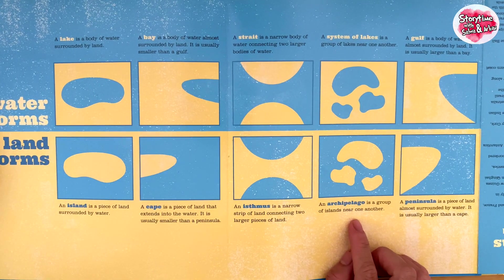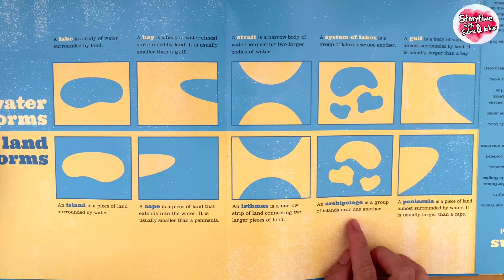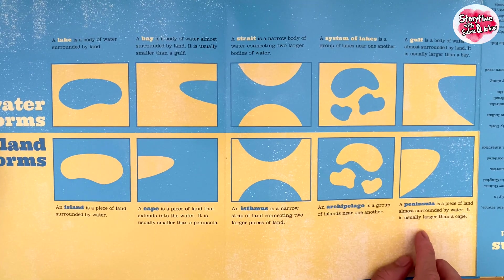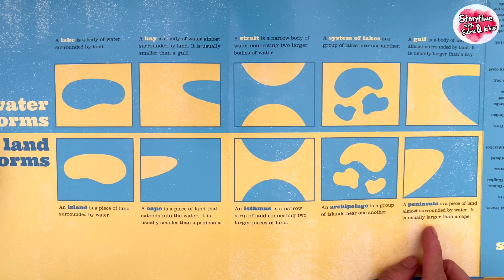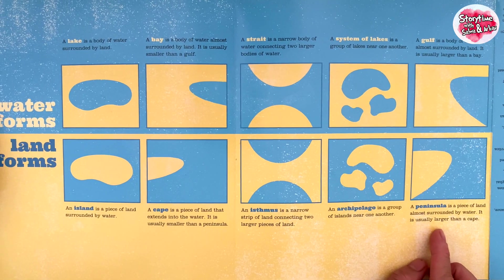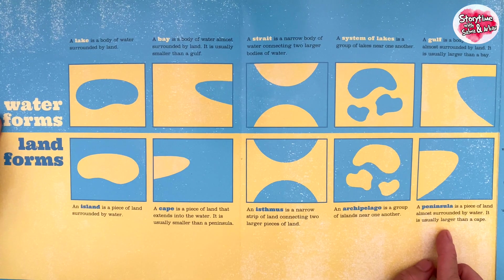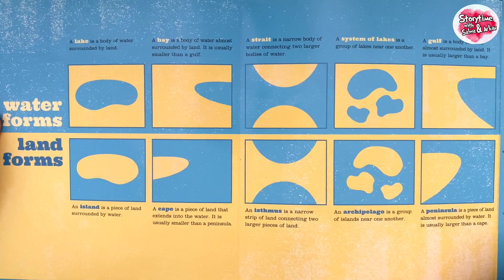An archipelago is a group of islands near one another. A peninsula is a piece of land almost surrounded by water. It is usually larger than a cape.